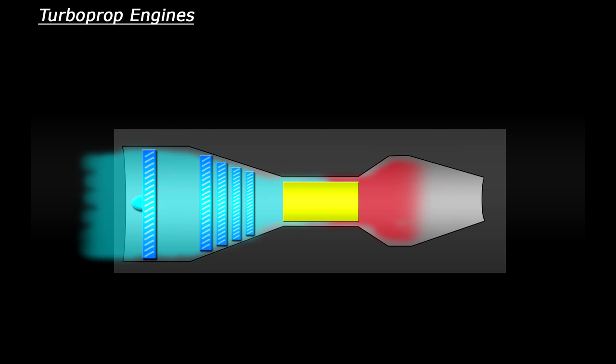After ignition the fuel-air mixture expands rapidly and passes through a second series of fans called the turbine. The hot gas continues to expand and exits the engine at high speed through an exhaust nozzle and this is what produces thrust.